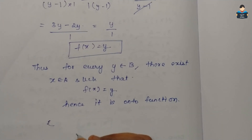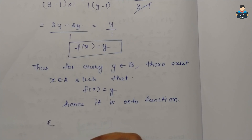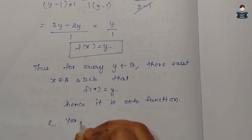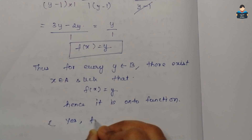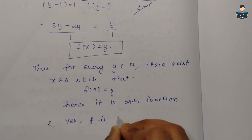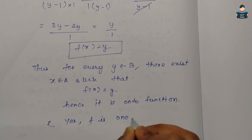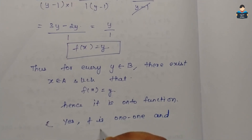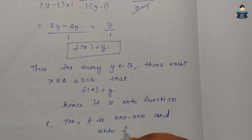The question asked: is f one-to-one and onto? The answer is yes — f is both one-to-one and onto function.